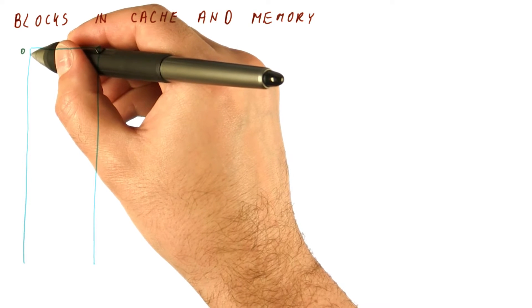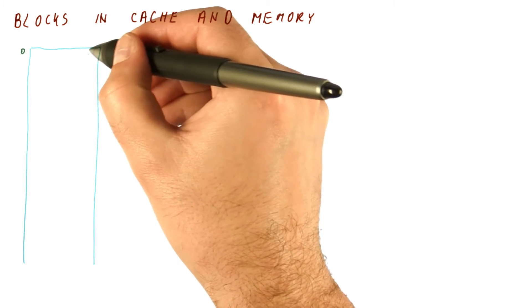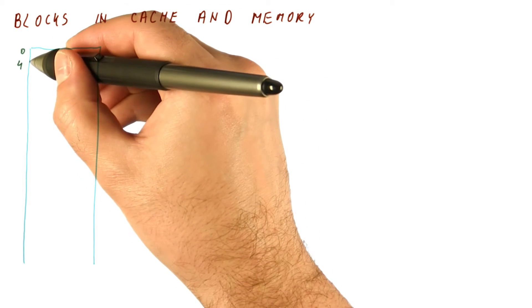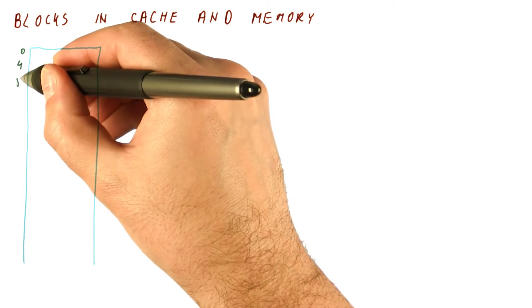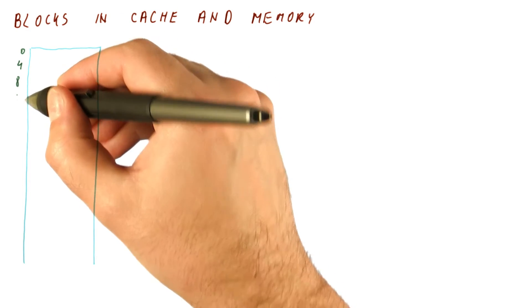Let's say this is location number zero, and let's say that each location is four bytes wide, so the next location is at address four, and then eight, and so on.